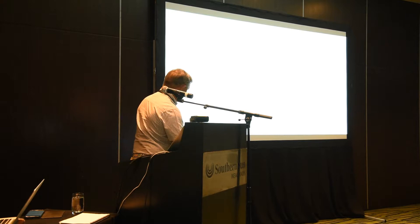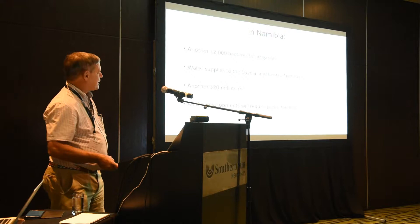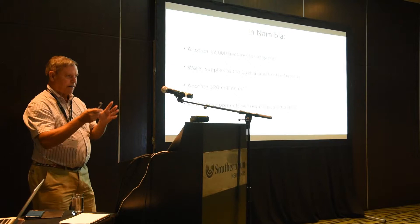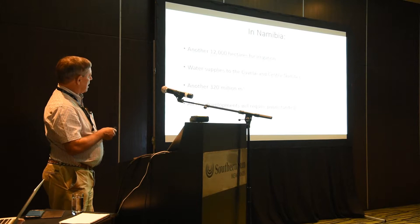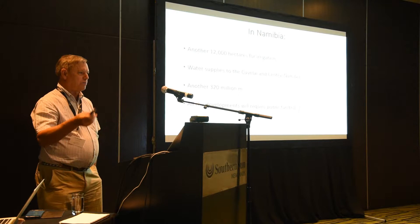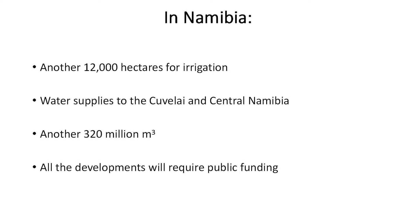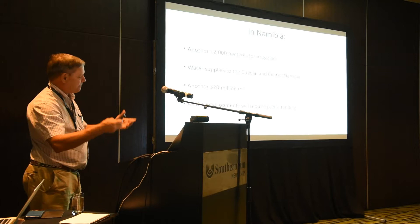In Namibia, of course, we have our own designs on not wasting all this water. At the moment about 2,100 hectares are irrigated in so-called green schemes along the Kubango River. There are plans to put in another 12,000, plus pump water to central Namibia. Cumulatively we take off about another 320 million cubic meters — about a seventh of what is officially planned. It's still a significant amount. And I want to make the point that none of these developments can happen without massive public funding; none of these things are economically sustainable as a business model. When economic analyses are done, it's rather like a deep hole where people are pouring in a lot of money and wasting a lot of water.